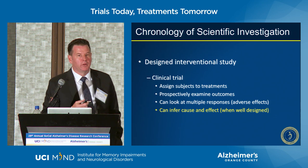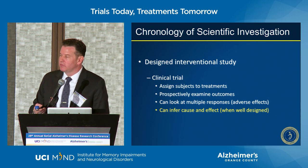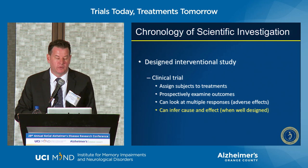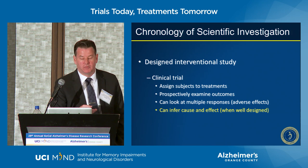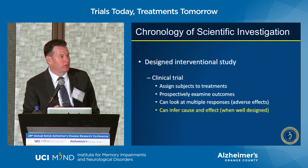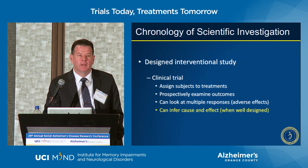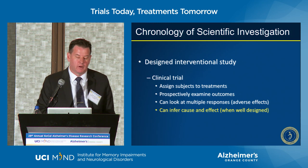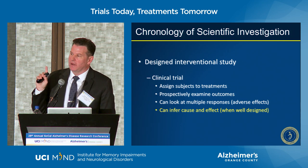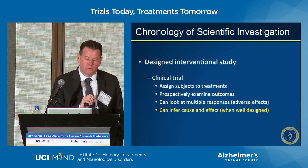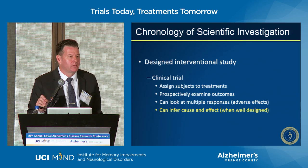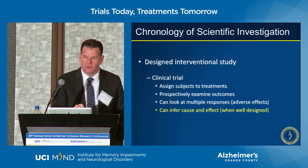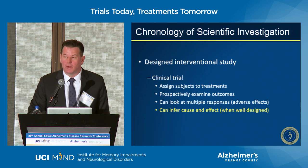In a clinical trial, we are assigning subjects to treatments — intervening in the process, hence 'interventional' rather than observational. We then prospectively examine outcomes, which allows us to assess efficacy and safety. Most importantly, a well-designed clinical trial allows us to infer cause and effect, which is something we cannot get from observational or anecdotal evidence settings.